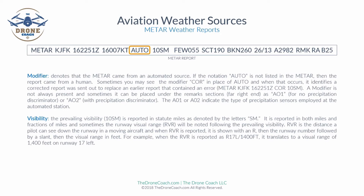An example would be METAR KJFK with the date, time, and COR squeezed in between. A modifier is not always present and can sometimes be placed in the remarks section at the far right end of the METAR report. A01 would indicate no precipitation discriminator, or A02 would indicate a precipitation discriminator — these denote the type of precipitation sensors employed at the automated station.